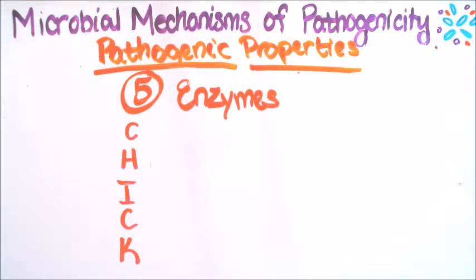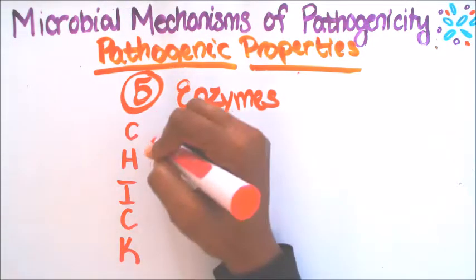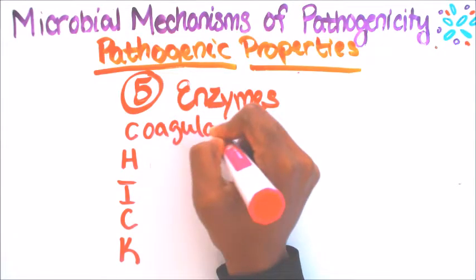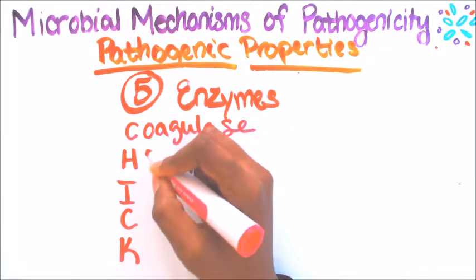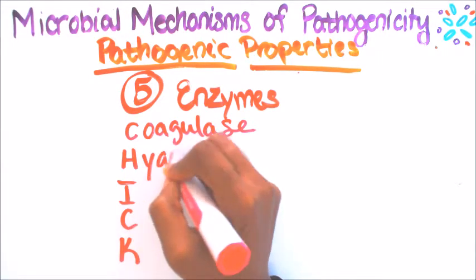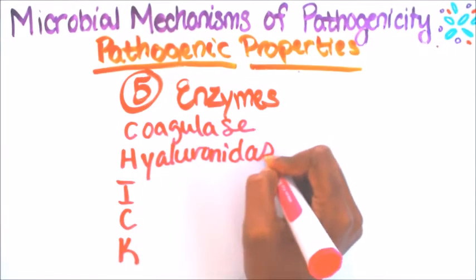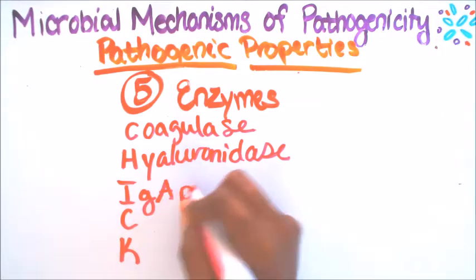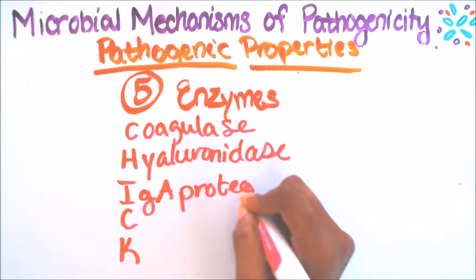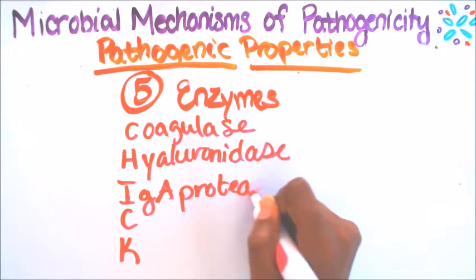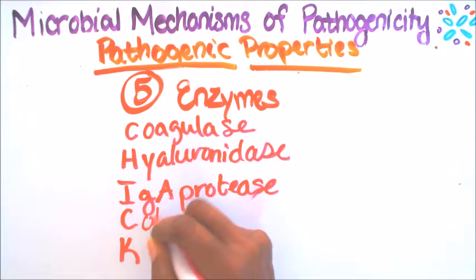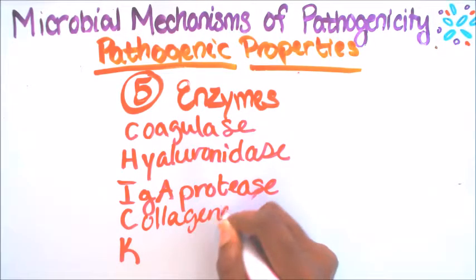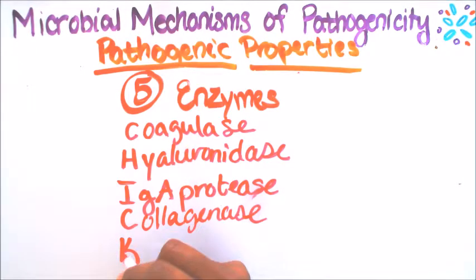The fifth property is enzymes. Here we have C for coagulase, hyaluronidase, I for IgA protease, another C for collagenase, and K for kinase.